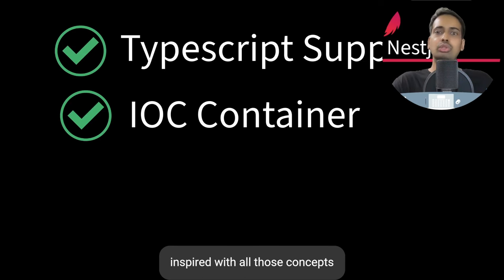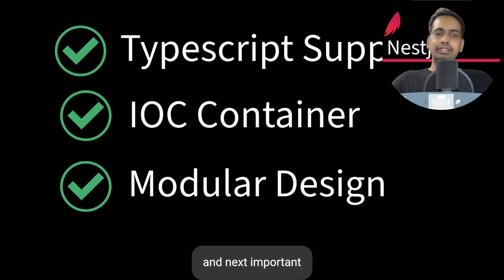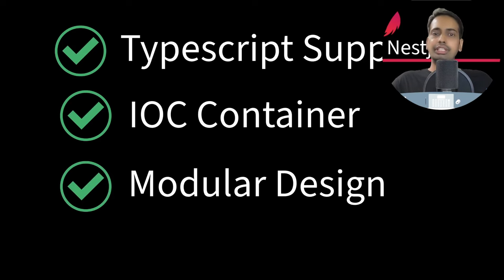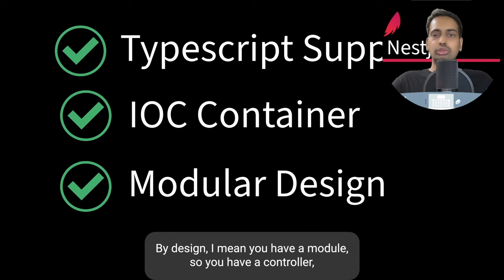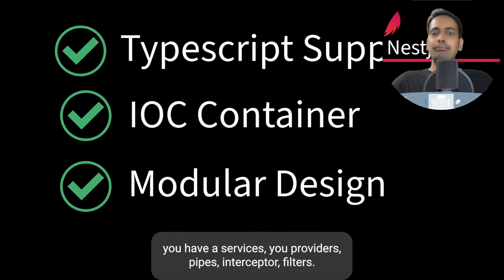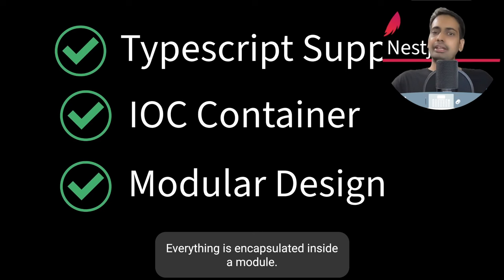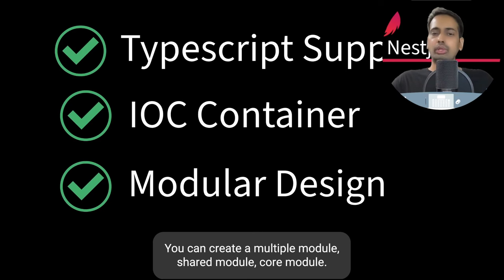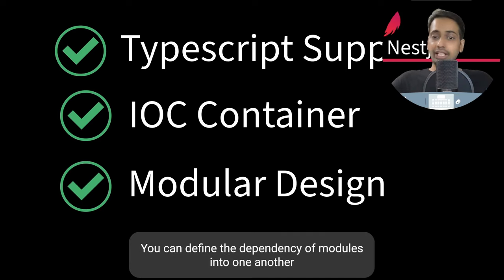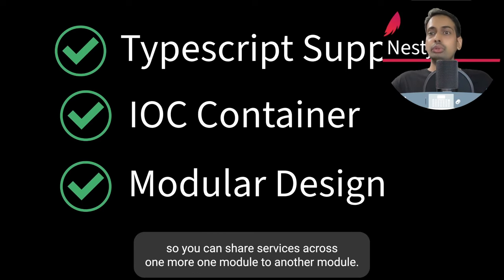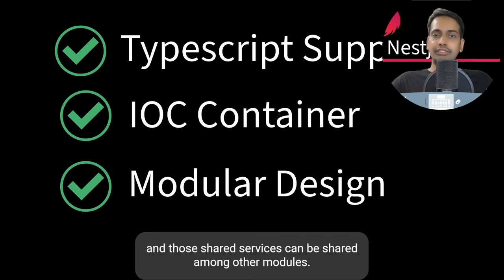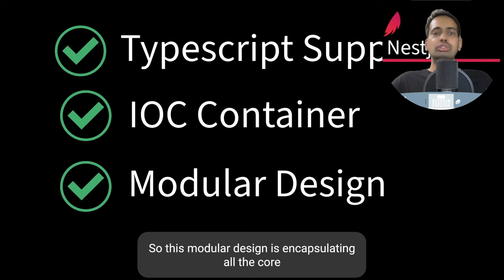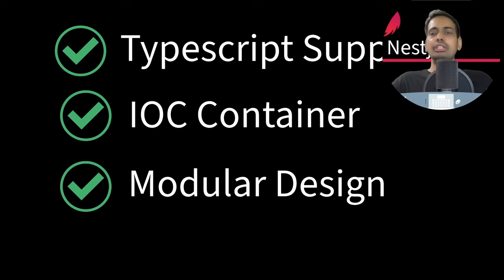The next important feature NestJS provides is modular design. Whatever application you are building in NestJS is modular by design — you have modules, controllers, services, providers, pipes, interceptors, and filters, all encapsulated inside a module. You can create multiple modules: a shared module, a core module, and define dependencies between modules so you can share services from one module to another.